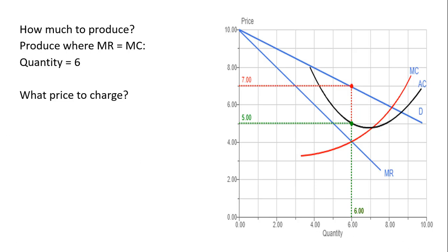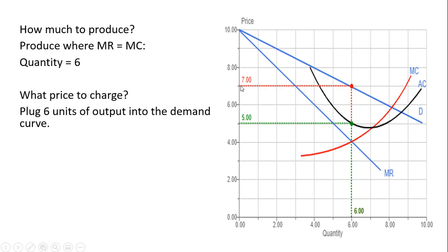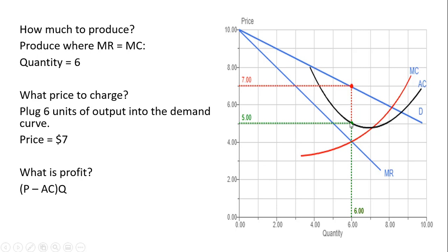The quantity of output is six. To find the price to charge, we take this six units of output, plug it into the demand curve, and walk across to the price axis — this firm will sell its output at $7 a unit. To calculate profit as price minus average cost times quantity: at six units of output, average total cost is $5. The firm is selling its product at $7 each, it costs $5 to make, and it is selling six units — so two times six means this firm is making a profit of $12. This is represented by a two-by-six rectangle, which represents the economic profit of the firm.